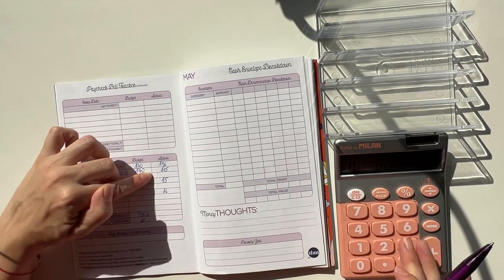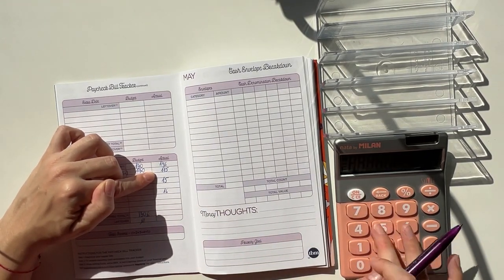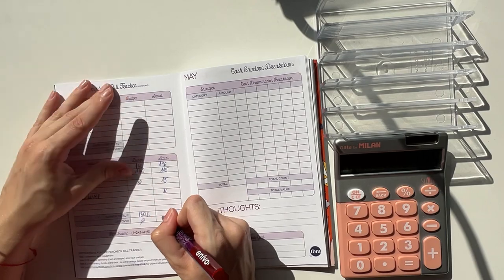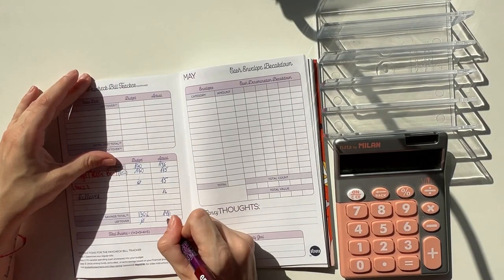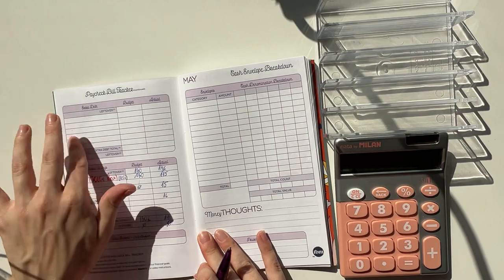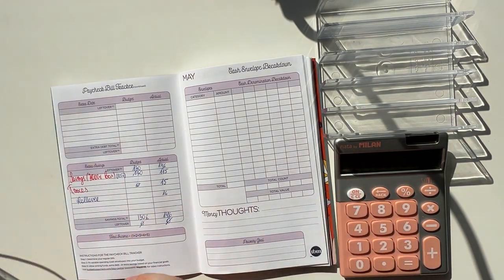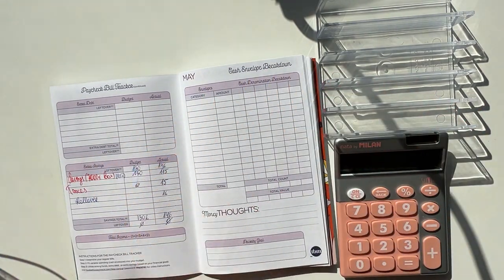115 plus 15 plus 16 is indeed 146, which means that we have zero euros left to budget, which means that each euro of our income has a place to go into our budget.